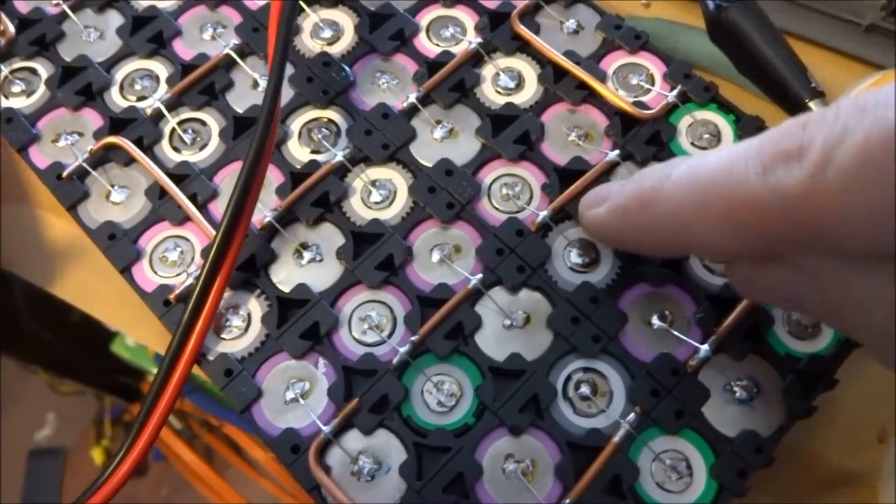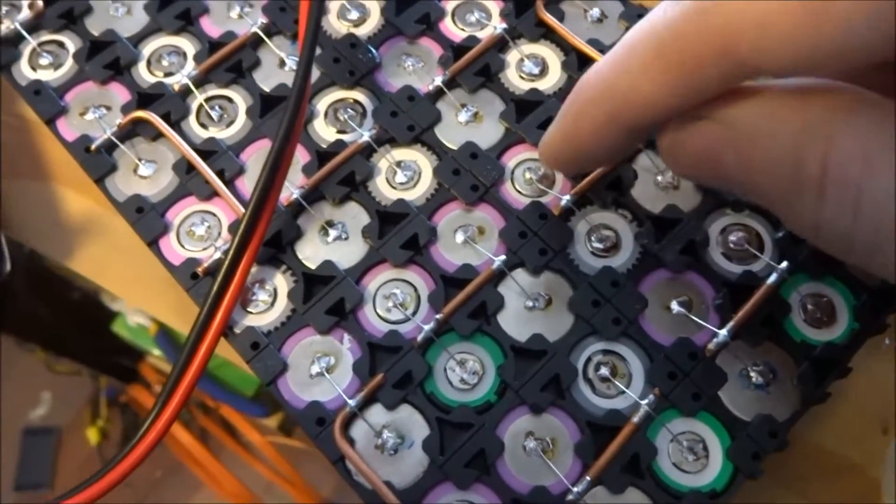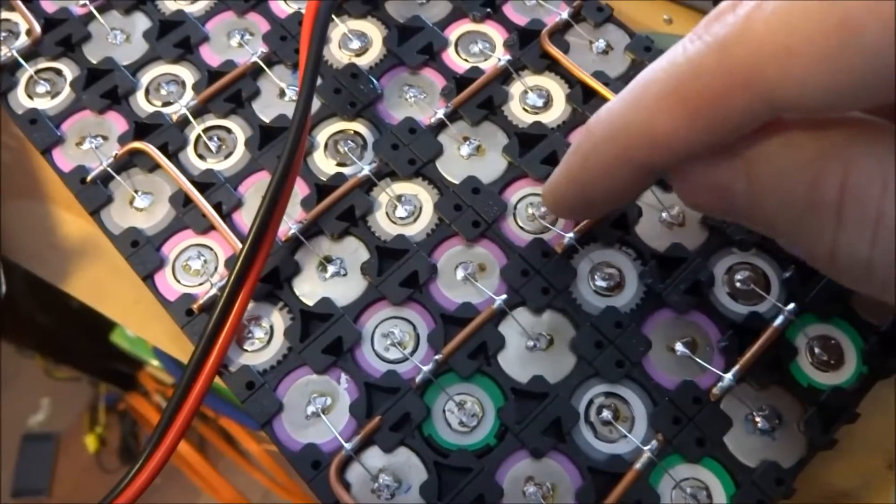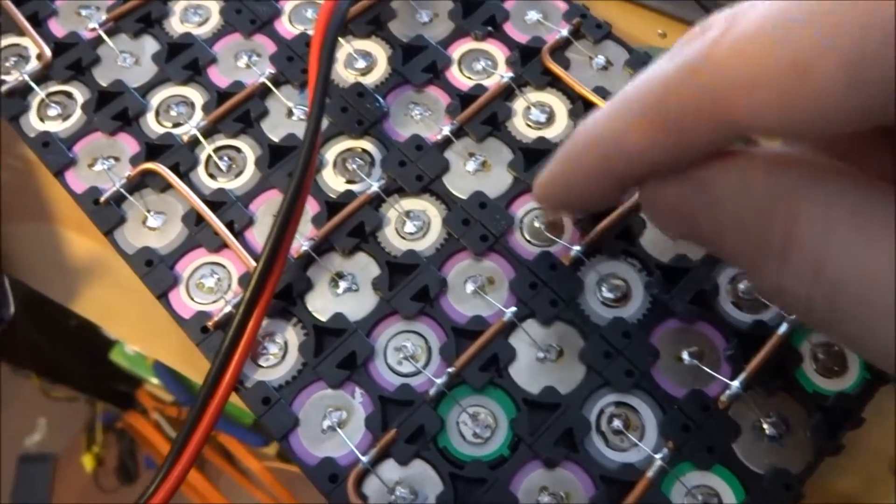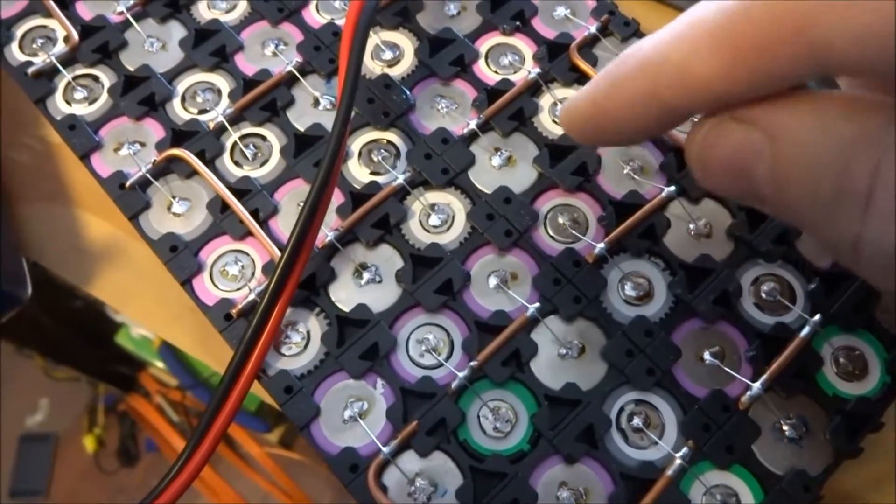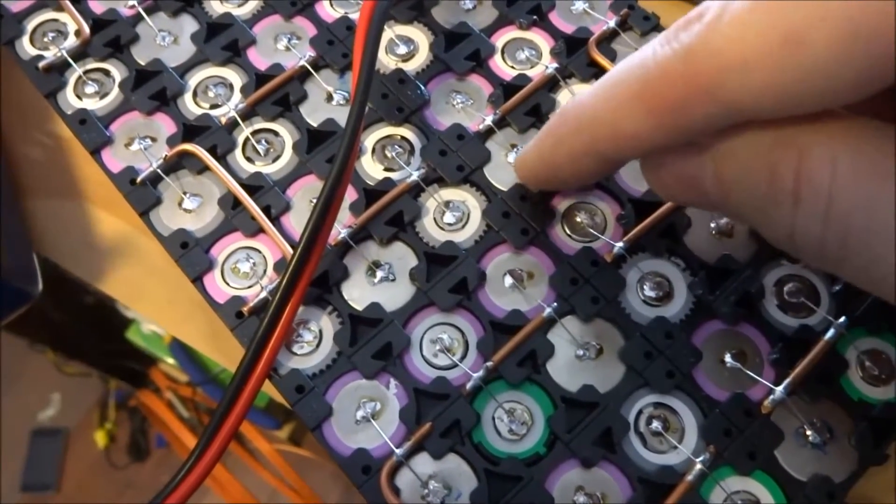It will melt the plastic if you hold on too long. Also, when you're tinning your 18650s, if you leave the iron there too long, it can damage the cells, especially on the negative side.